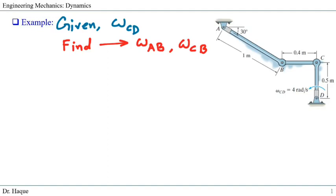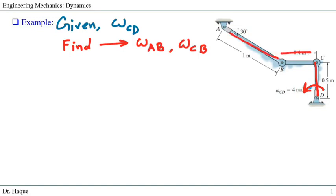The problem shows an arrangement with link CD connected to link BC, which is connected to AB. Pin joint A and point D are fixed and cannot move, but points B and C can move. Given is the angular velocity omega_CD in the counterclockwise direction, the arm lengths are 1 meter and 0.4 meter, and the angle of AB is given. We need to find the angular velocities of links AB and CB.